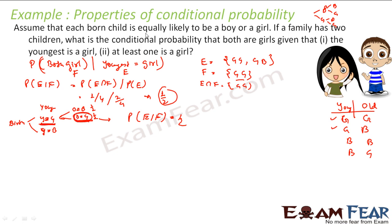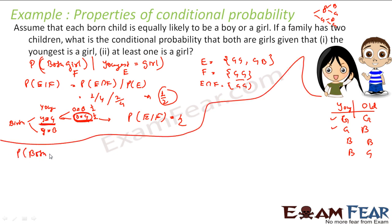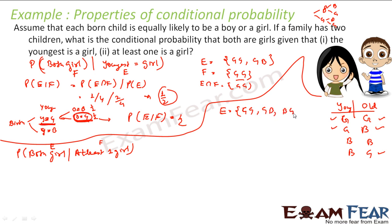The second question: find the probability that both are girls given that at least one is a girl. Let E be 'at least one girl' and F be 'both girls.' For at least one girl, the possible scenarios are GG, GB, and BG — three elements in E. F has only one scenario: GG. Using the formula, P(F given E) = P(E∩F) divided by P(E).